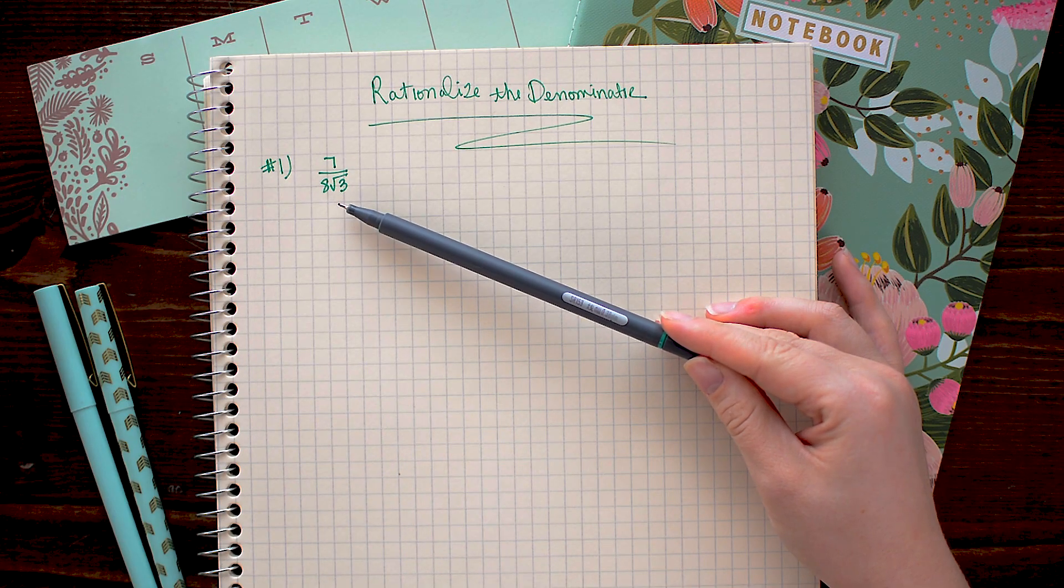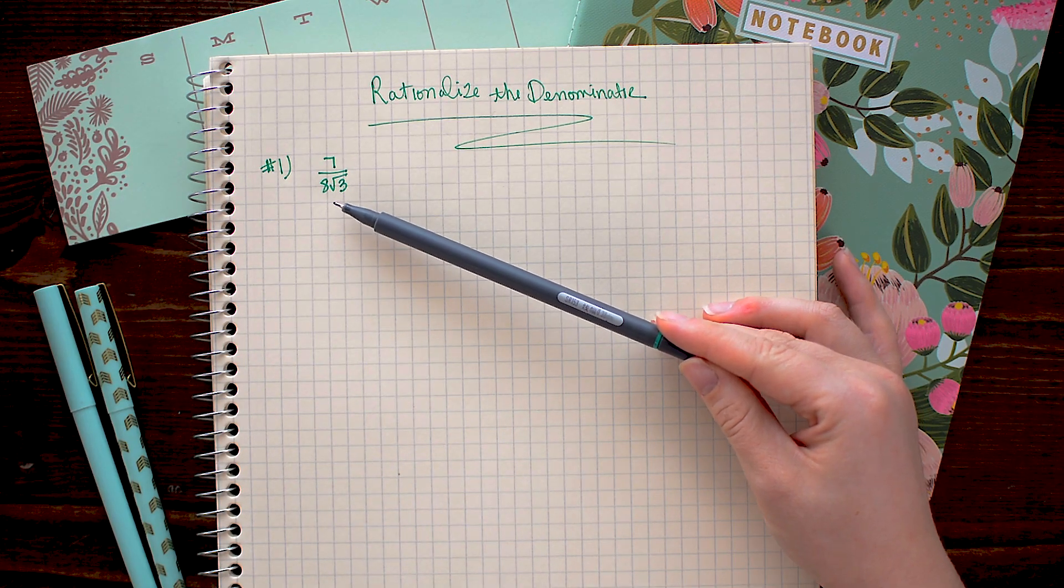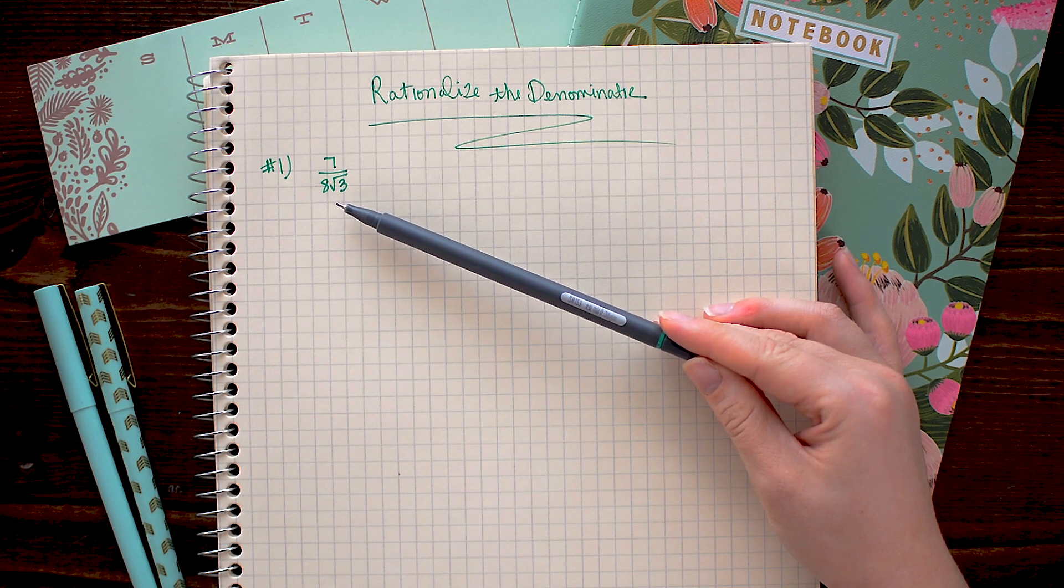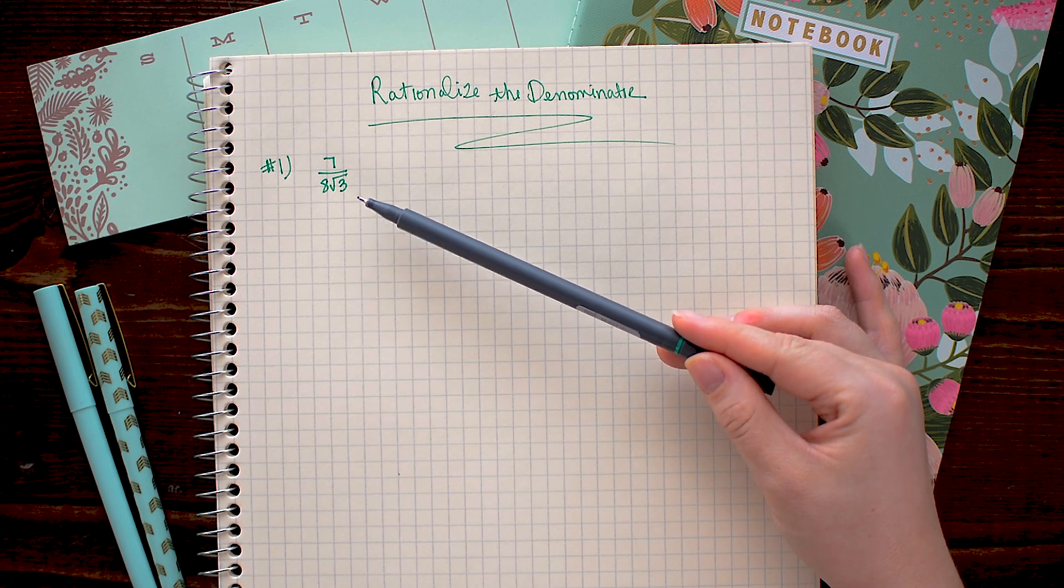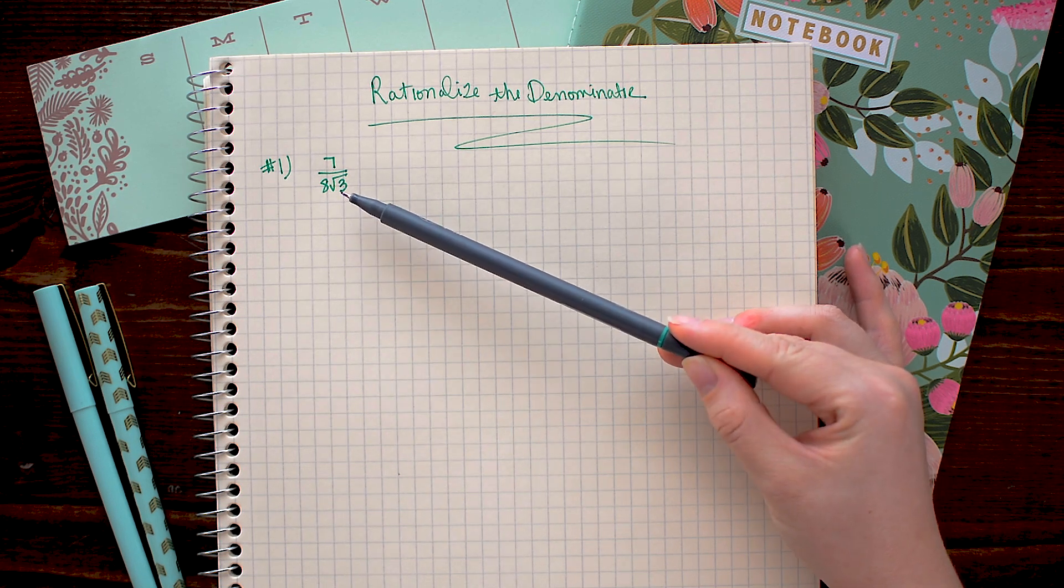Rationalizing the denominator simply means we want to get any roots that are in the denominator out of the denominator. To do this, we need to multiply by a form of 1 that will help us cancel out this square root 3.